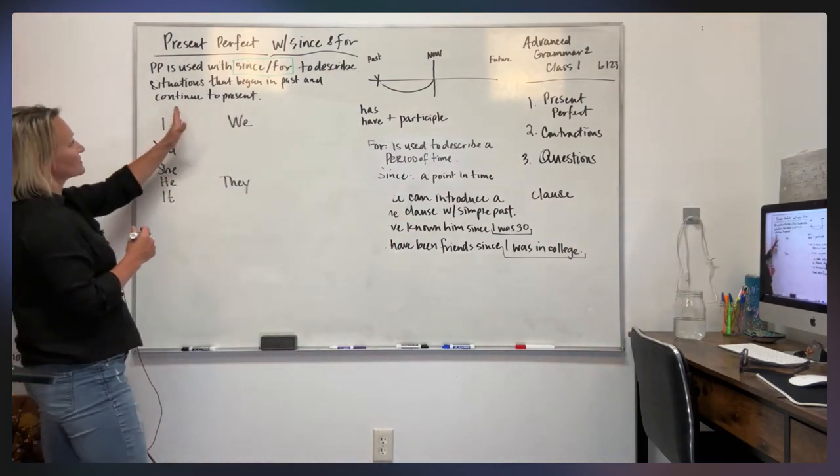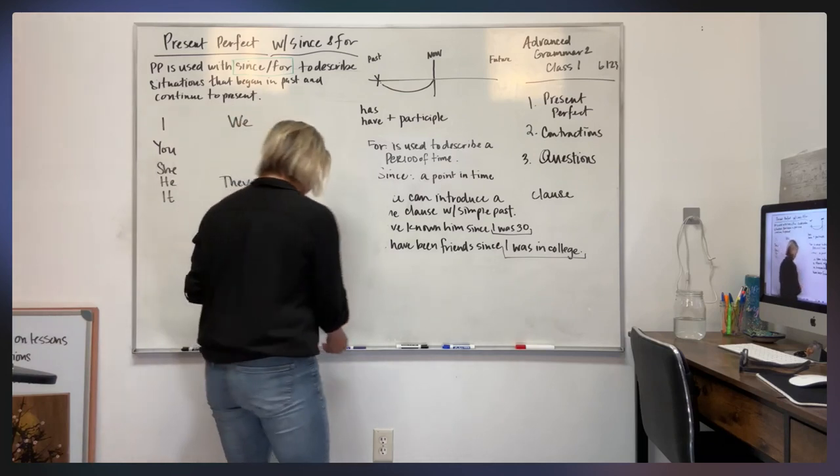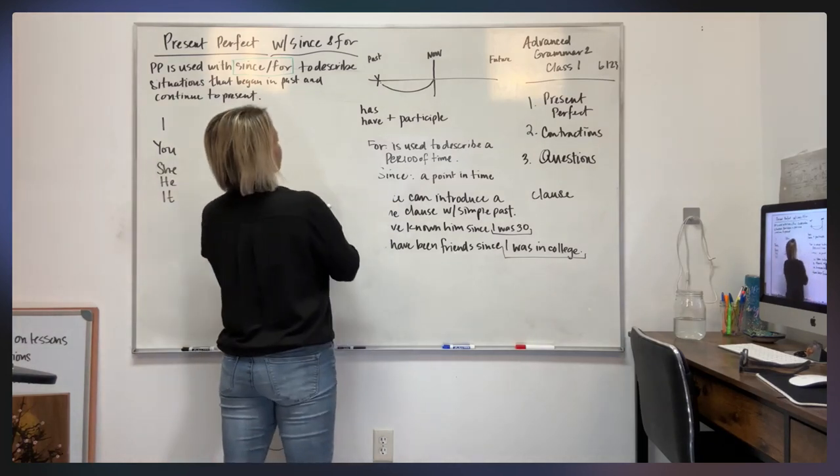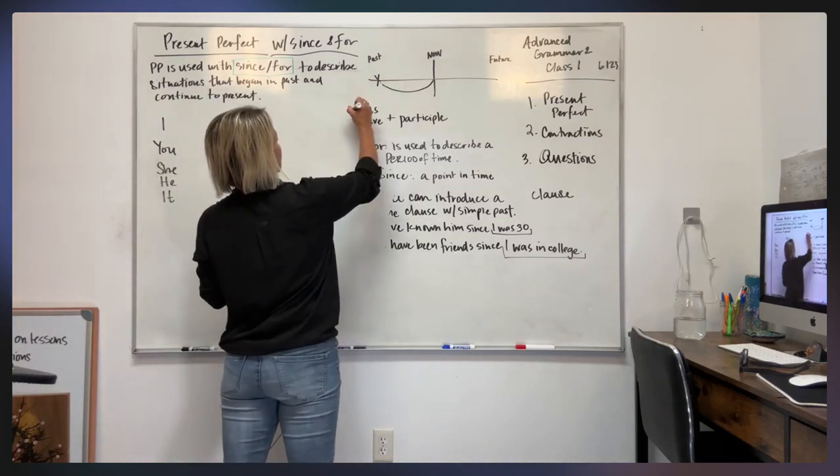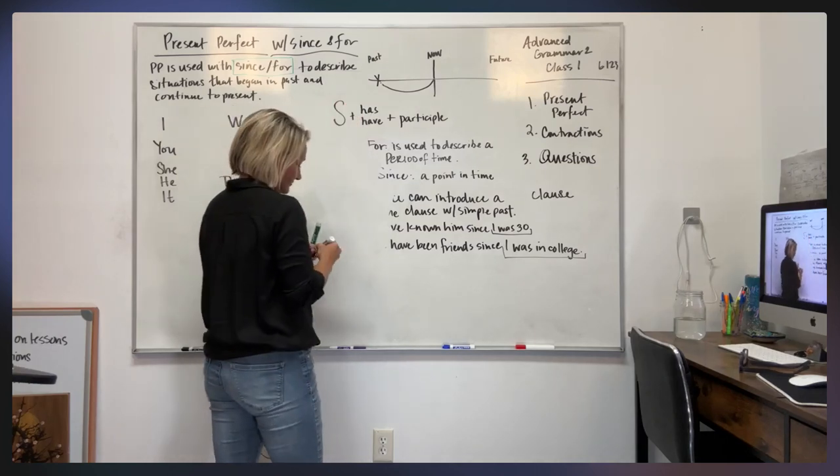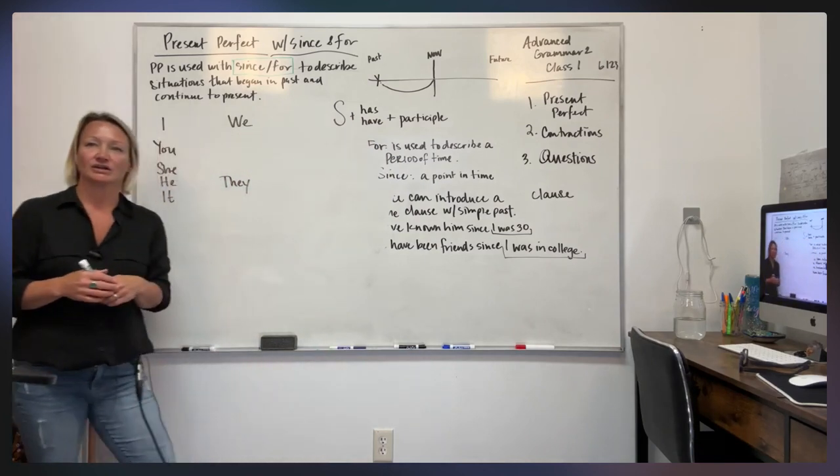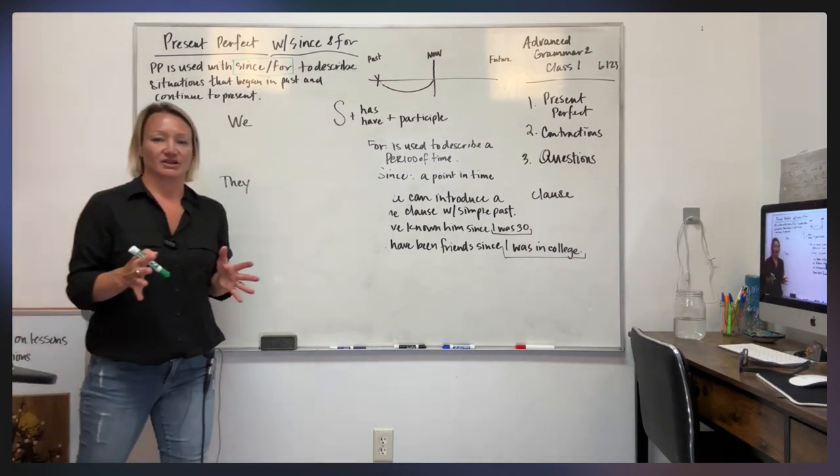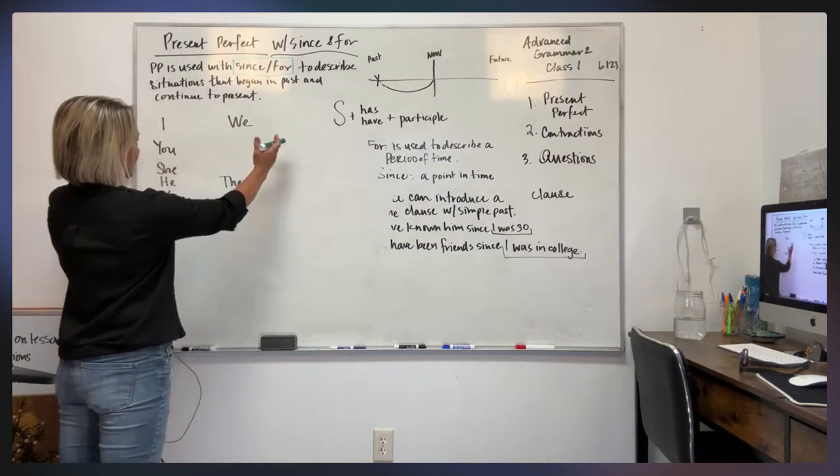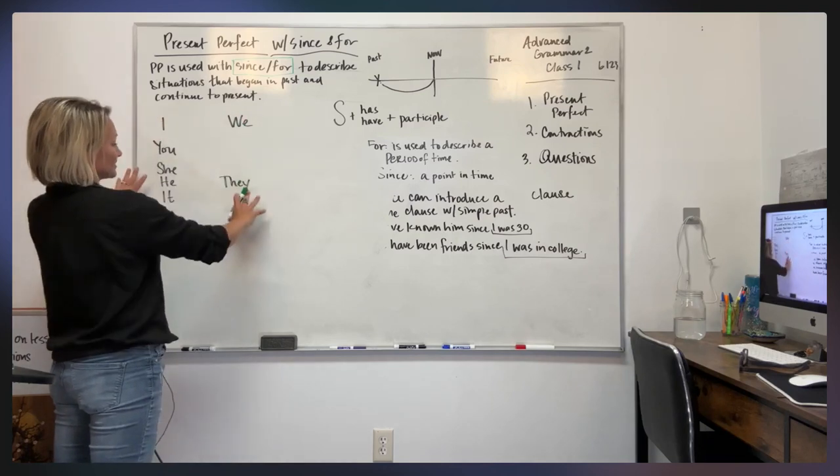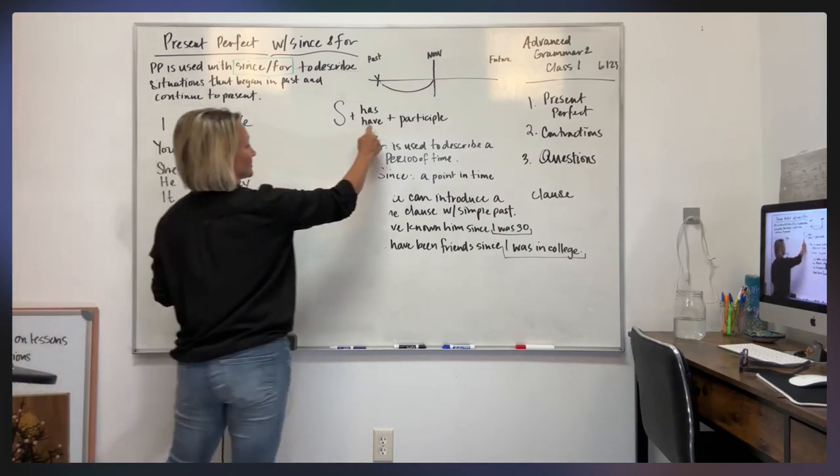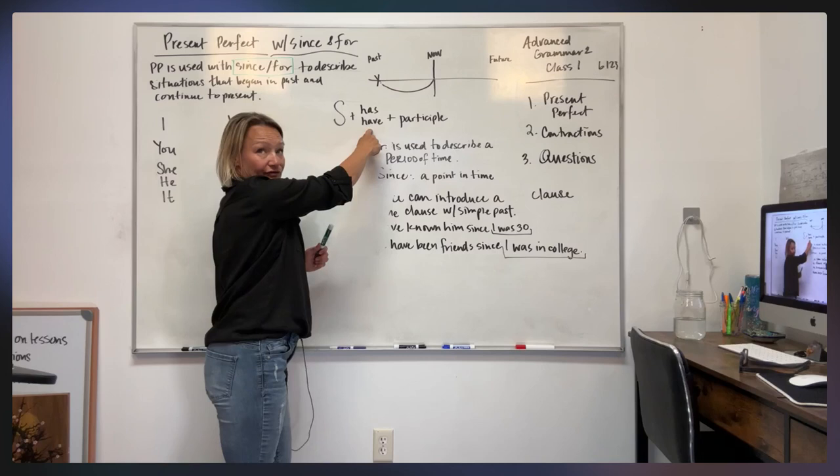Okay. So when we're using a past perfect, oh, we erased part of our thing here. So we've got here, let's go back to our formula. That's subject. Remember English is a subject, verb, object language, subject, verb, object. Okay. So we have our pronouns or subjects here. Next we need has or have.